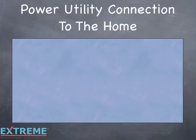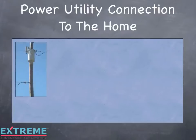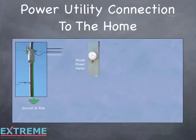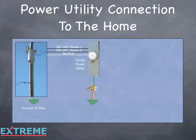Before we talk about the drop isolator, let's take a look at how the power utility is connected to the home. At the pole is a power transformer that converts the high line voltage down to 240 volts AC, which will be used in the home. At each transformer a ground is established, and at the house is a power meter. From the power transformer to the power meter are two 120 volt AC lines at different phases, and one neutral line used for the power return path. The neutral line is bonded to the power ground. At the power meter, the power utility establishes a ground, which provides safety by taking any faults to ground and also provides a ground reference.